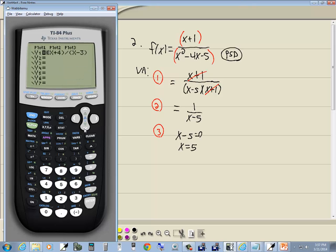So press y equals, press clear. Do a beginning parentheses x plus 1, closing parentheses, divided by beginning parentheses, x, and then x squared button, minus 4x, minus 5, and then closing parentheses, and then graph.